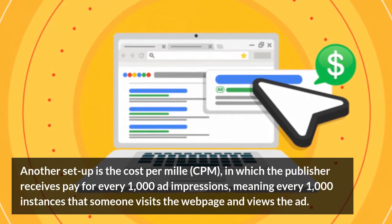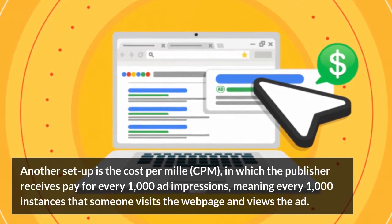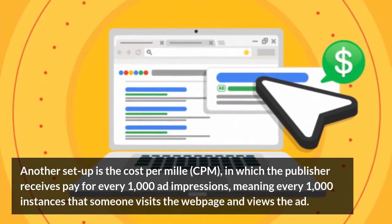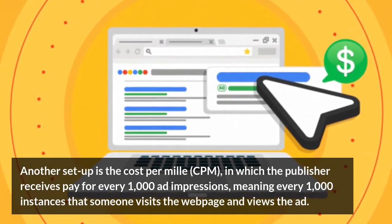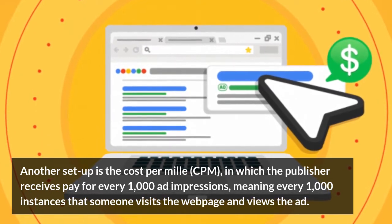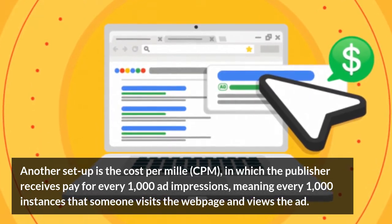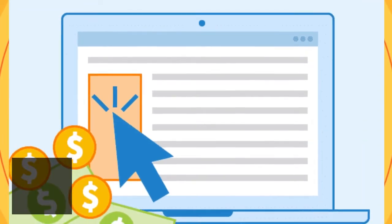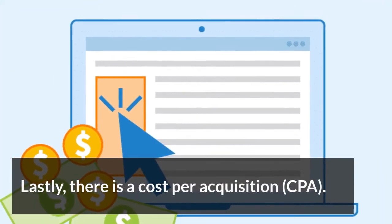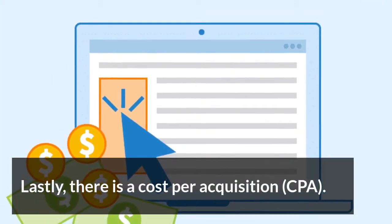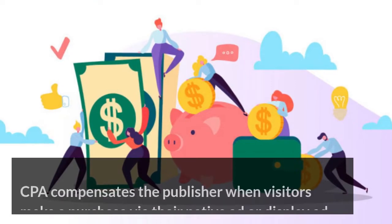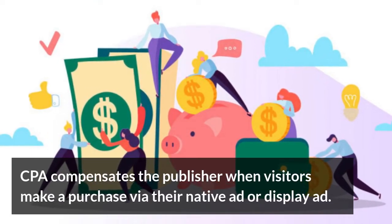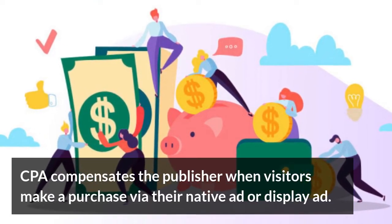Another setup is the cost per mil, CPM, in which the publisher receives pay for every 1,000 ad impressions — meaning every 1,000 instances that someone visits the web page and views the ad. Lastly, there is cost per acquisition, CPA. CPA compensates the publisher when visitors make a purchase via their native ad or display ad.